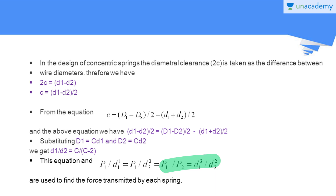With the help of these two forces, we can find the critical stresses in both springs, and applying theories of failure with permissible stress values, we can find the factor of safety for both springs. The two key equations are: d₁/d₂ = c/(c − 2), and P₁/P₂ = D₁²/D₂², where P₁ and P₂ are the forces transmitted by spring 1 and spring 2, D₁ and D₂ are the mean coil diameters, and c is the spring index common to both springs. Thank you.